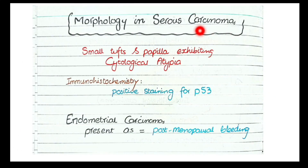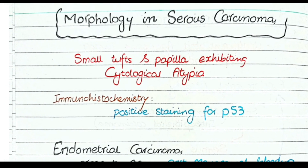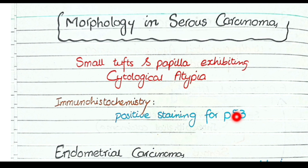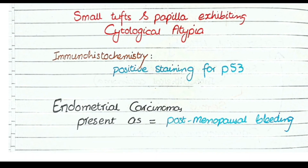In serous carcinomas, you will not see endometrial glands; instead, you will see undifferentiated structures comprising small tufts and papillae exhibiting cytological atypia. On immunohistochemistry, there is positive staining for p53 because serous carcinomas typically contain p53 mutations, and the mutated p53 protein can be identified immunohistochemically. Clinically, endometrial carcinomas usually present as postmenopausal bleeding, since after menopause normal bleeding stops but these tumors have a tendency to bleed.